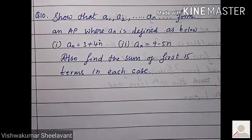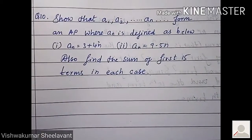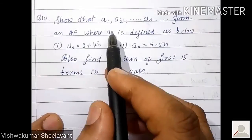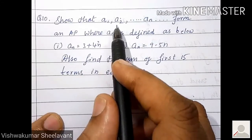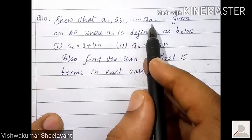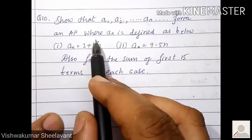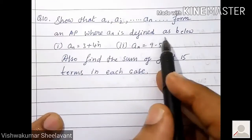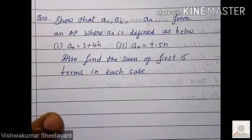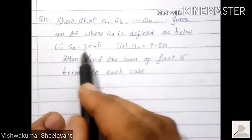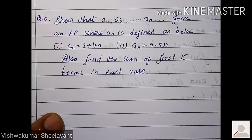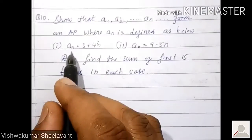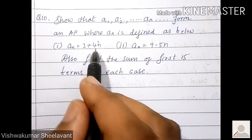Now take the 10th question. So that a1, a2, ... an form an AP, where an is defined as below. First one: an is equal to 3 plus 4n. Second one: an is equal to 9 minus 5n. The nth term simplified version has been given.